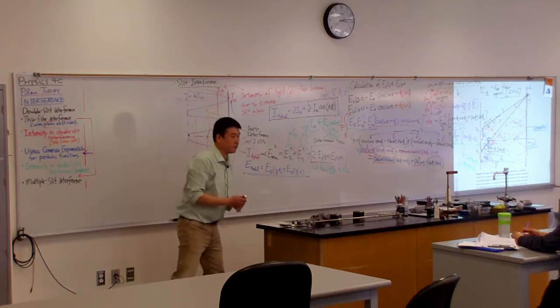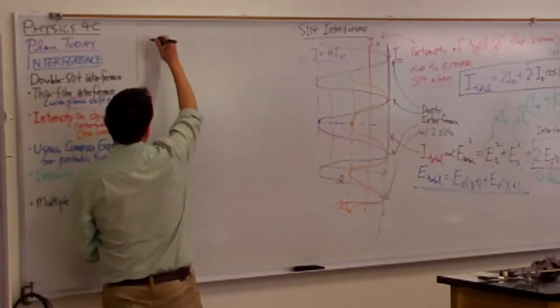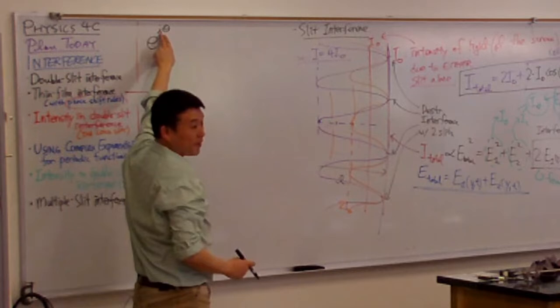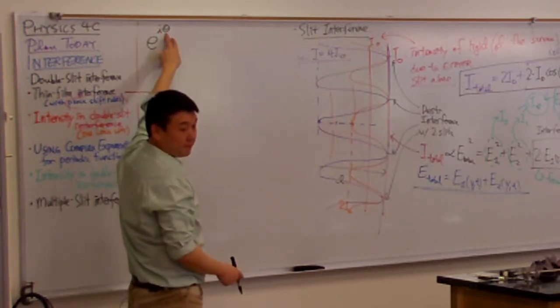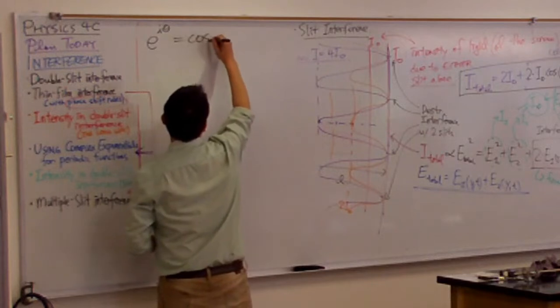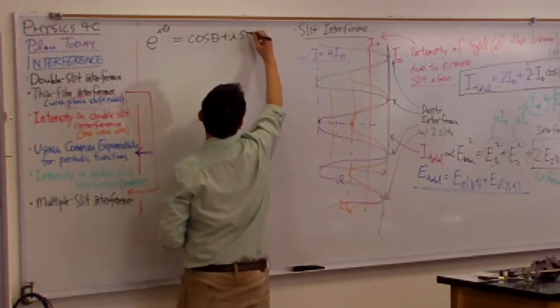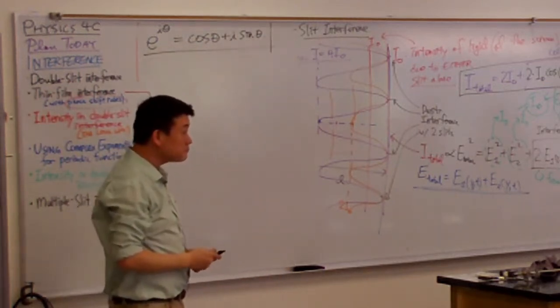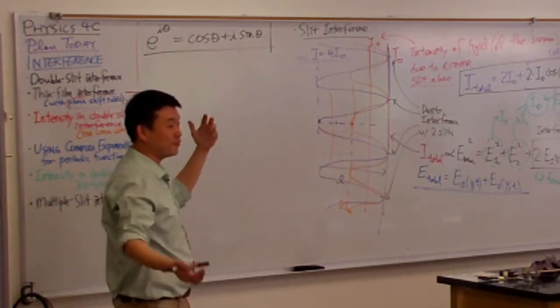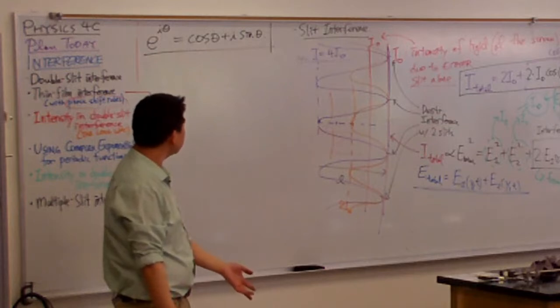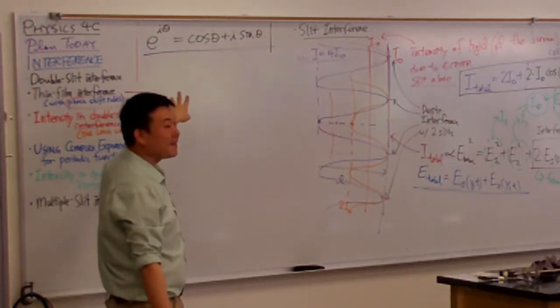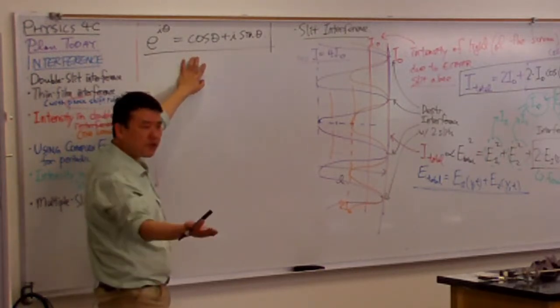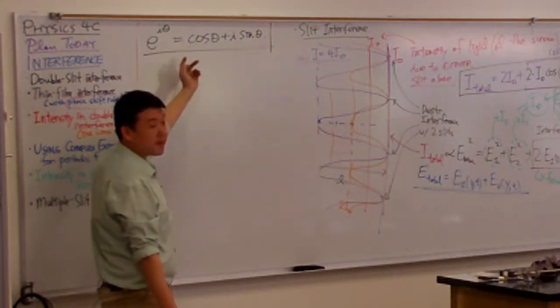It starts out with this Euler's formula, which says e to the i theta, meaning exponential of imaginary number i times some variable theta is equal to cosine theta plus i sine theta. Do people remember seeing this? Euler's formula, outside of physics 4b where you would have seen it when I brought it in. I started doing this two semesters ago, so all of you should have seen it if you took my 4b, but even if you haven't, you saw this in trigonometry, right? And now that you have taken calculus two, you can actually prove this.